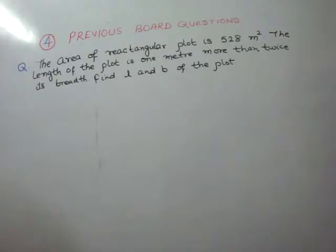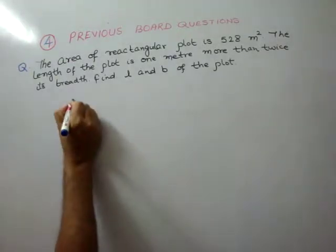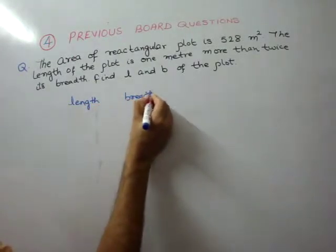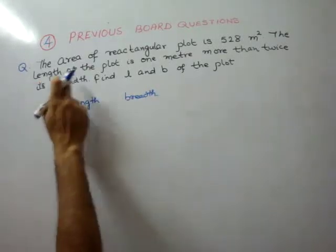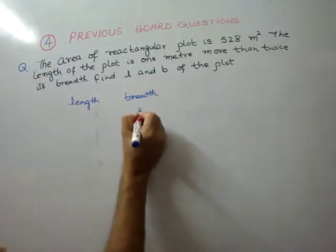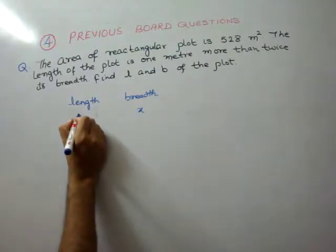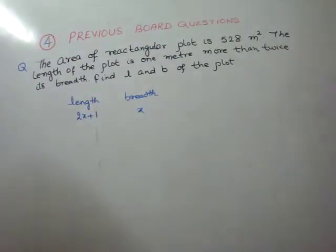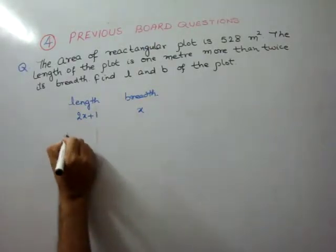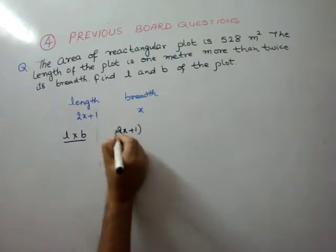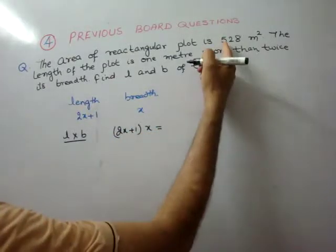So, the length of the plot is 1 meter more than twice its breadth. Let breadth be x, so length is 2x plus 1. The area of the plot is L into B, so 2x plus 1 into x is equal to 528.